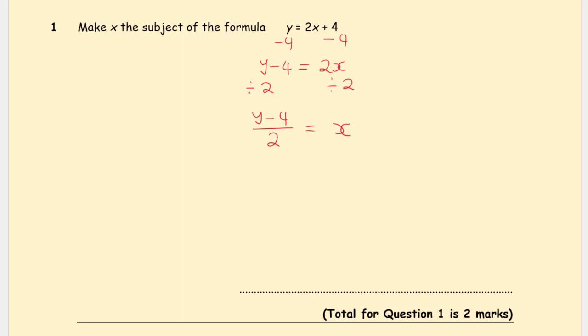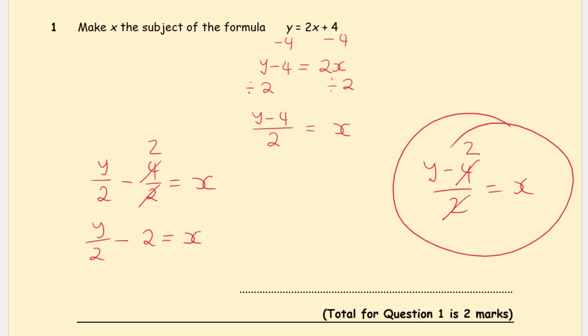Just be careful here. Some people will simplify it. You can simplify if you write it out separately. For example, if I write it out as y over 2 minus 4 over 2 equals x, then I can simplify 4 over 2. That will give me y over 2 minus 2 equals x. But we cannot simplify it as y minus 4 over 2. Be careful with this simplification. Leave it as it is.